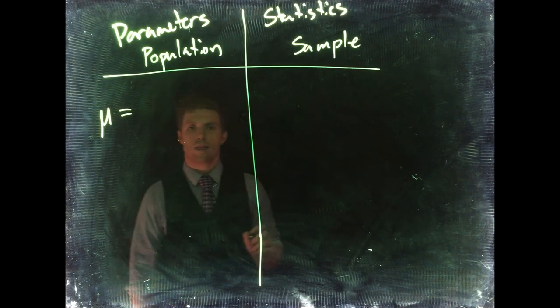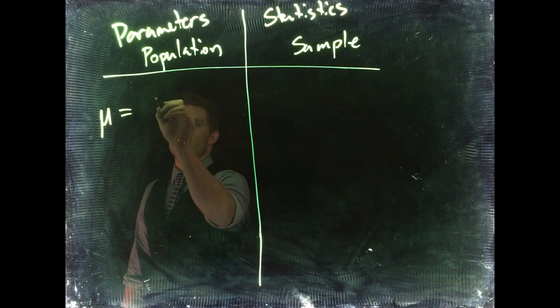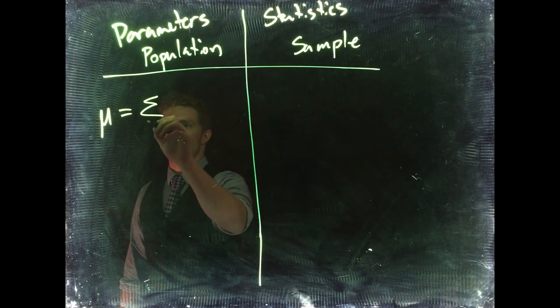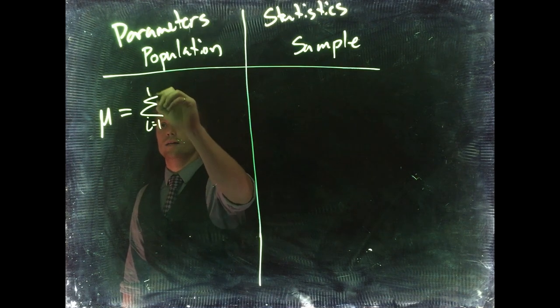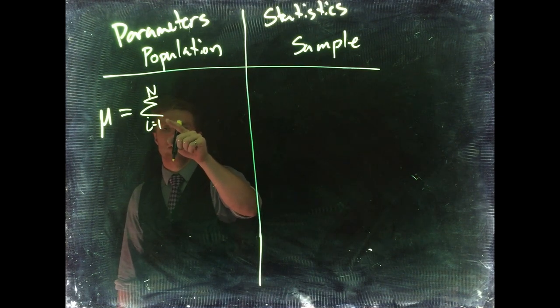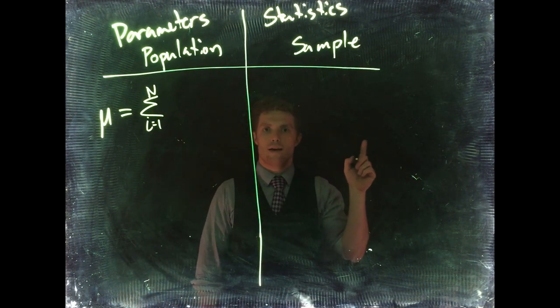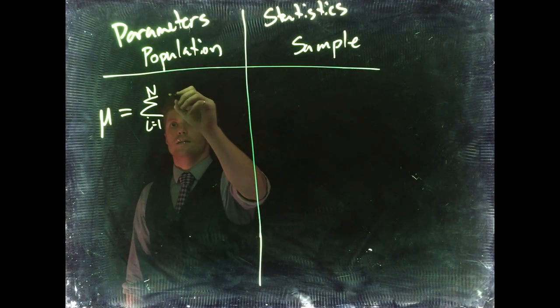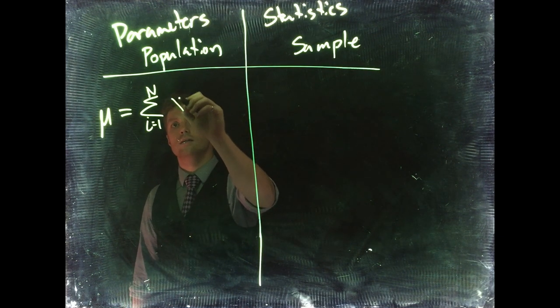So mu would equal - we've got to do some summation notation - summation from i equals 1 to capital N, from your first tree all the way to every single tree at the end. This would be xi,